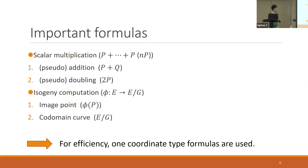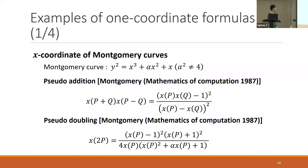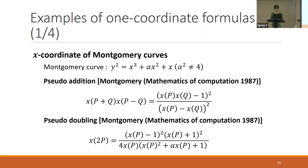In isogeny-based cryptography, we use one-coordinate type formulas. The most basic one uses the x-coordinate of the Montgomery curve. The first formula is the ladder addition: we can compute the x-coordinate of P plus Q from the x-coordinate of P, x-coordinate of Q, and x-coordinate of P minus Q. The second is the ladder doubling: we can compute the x-coordinate of 2P from the x-coordinate of P.